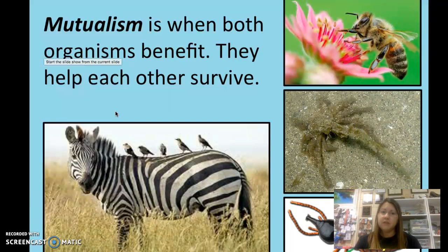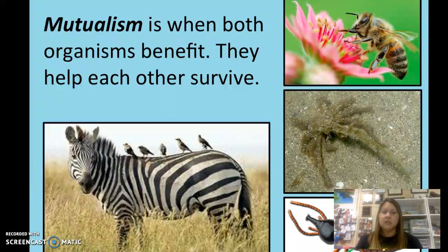Examples of mutualism include oxpecker birds, which often live on mammals like zebras, oxen, and water buffalo, eating the bugs, mites, and ticks off those animals. The birds get food, and the zebra doesn't have ticks biting it — it's good for both of them.